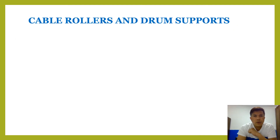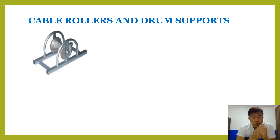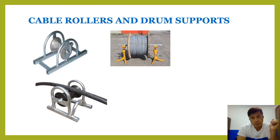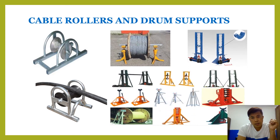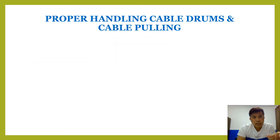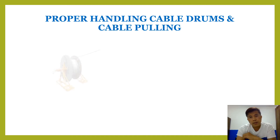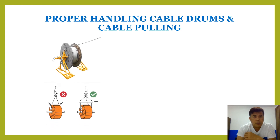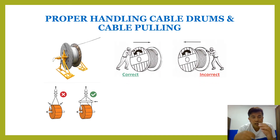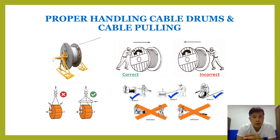Cable roller and drum support — this is most important as well. When you are doing cable pulling, the roller must be there. And also the drum — support drums are always there to roll your cable drums. Proper handling of cable drums and cable pulling: this is how to handle the cable, lifting up and cable pulling, how to roll your drums correctly or incorrectly, and also the correct way of pulling your cable.